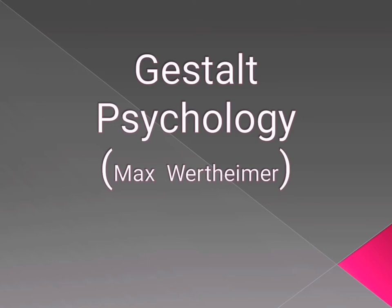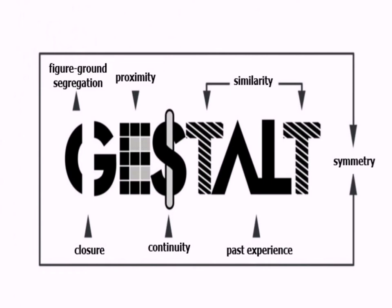Gestalt Psychology by Max Wertheimer. When we say Gestalt, it is a German word which means form or configuration. When we say form, it means buo or bumuo — to form or be whole. Just like when a teacher says, 'Form a group into two, form a group into three.' That is what we call form. Configuration, on the other hand, refers to the arrangement of elements, or the combination of elements.